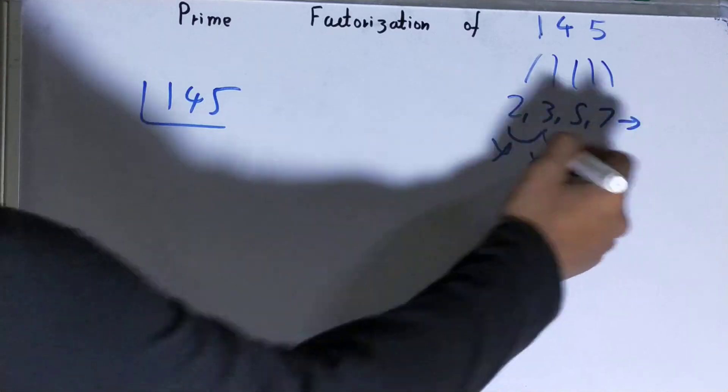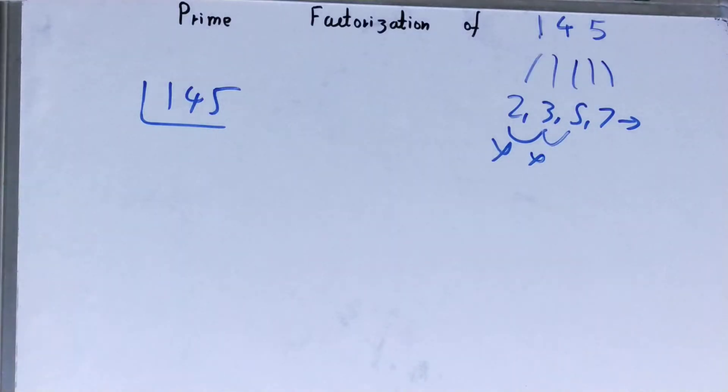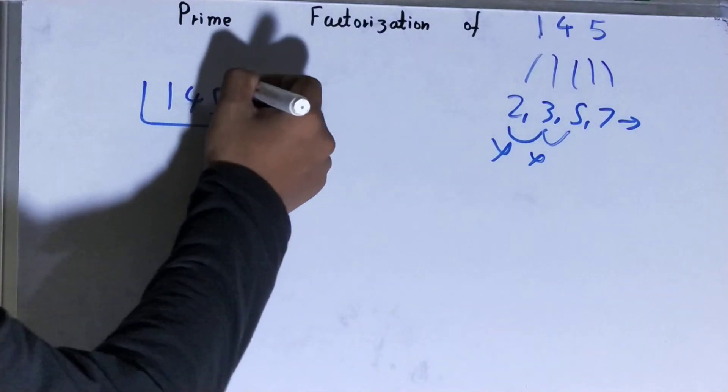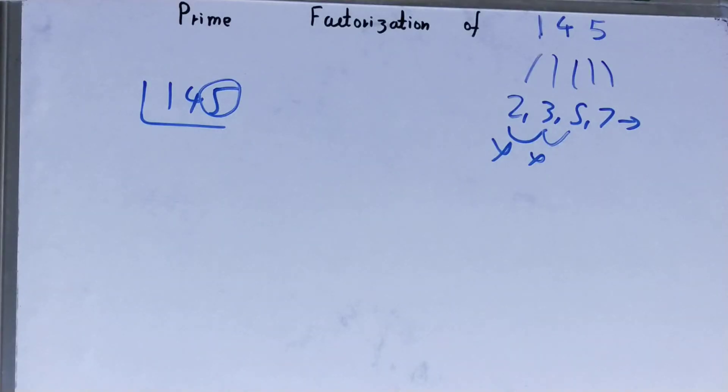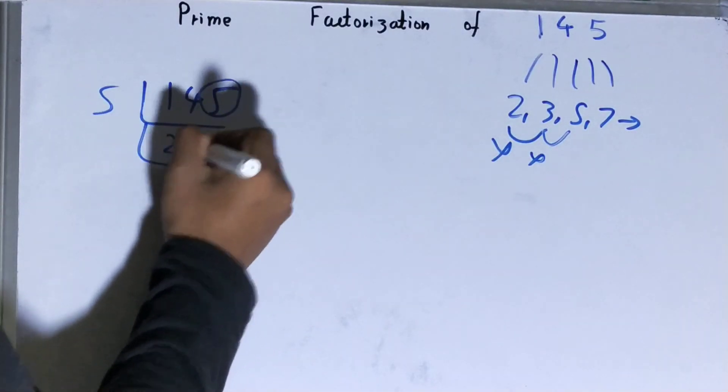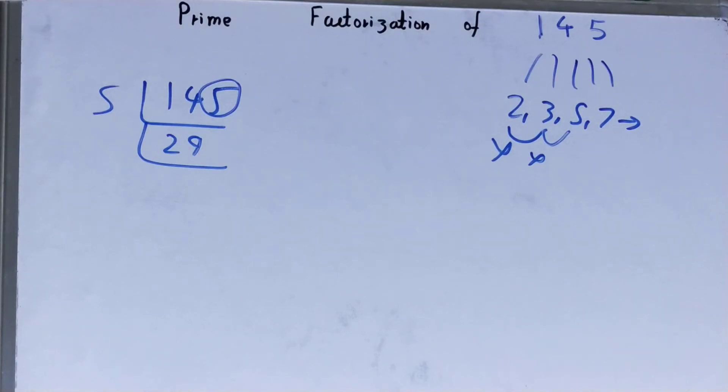That is 5. Is it divisible by 5? It clearly is because the last digit is 5, right. So divide it: 5 into 145 gives 29 times. Further on, is this 29 divisible by 5? It is not.